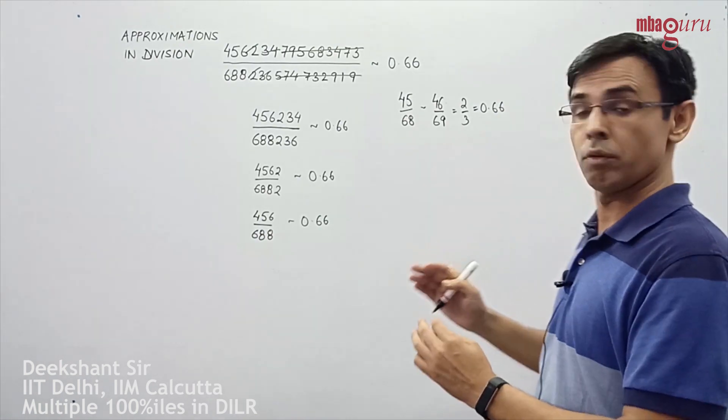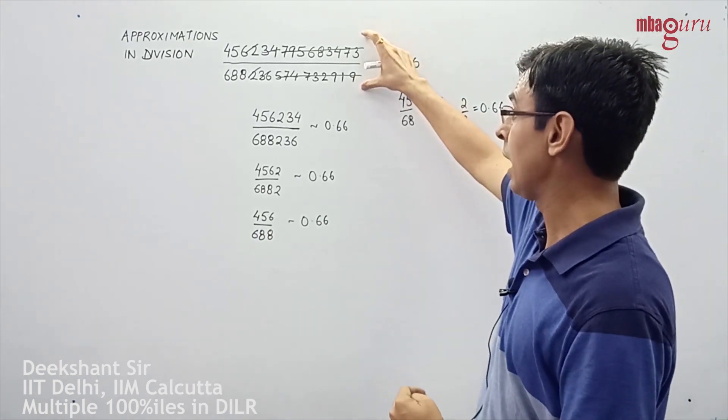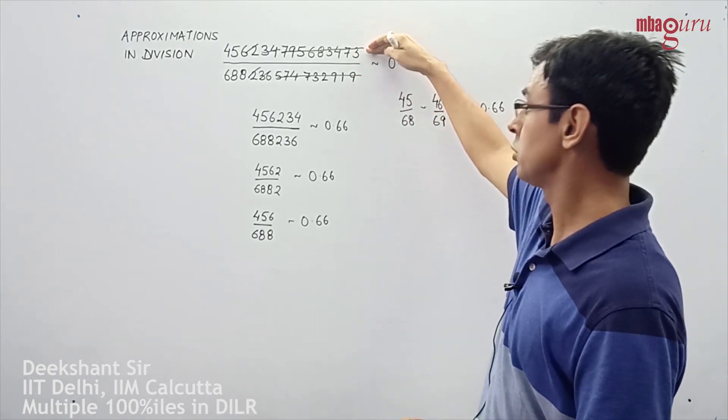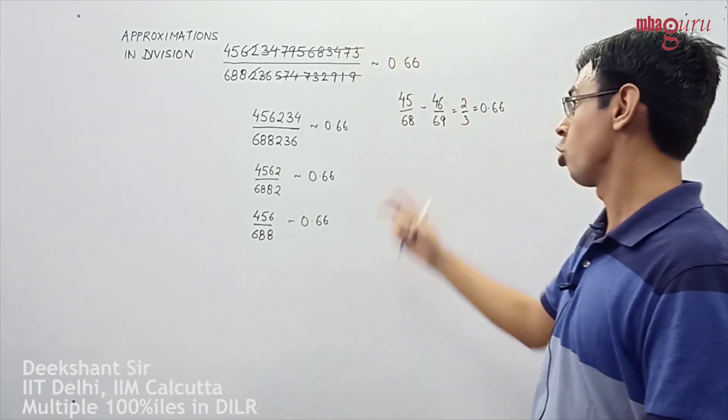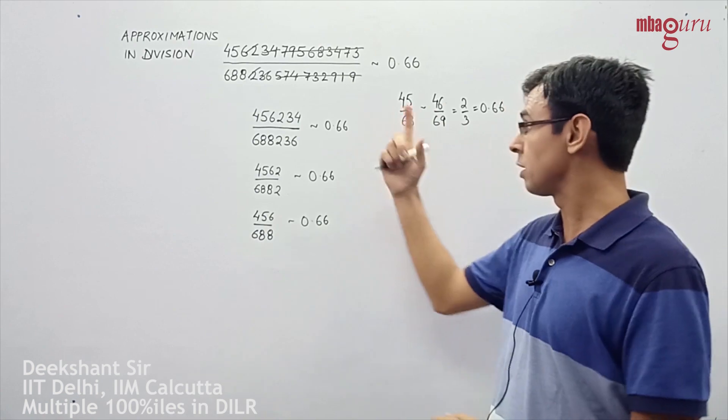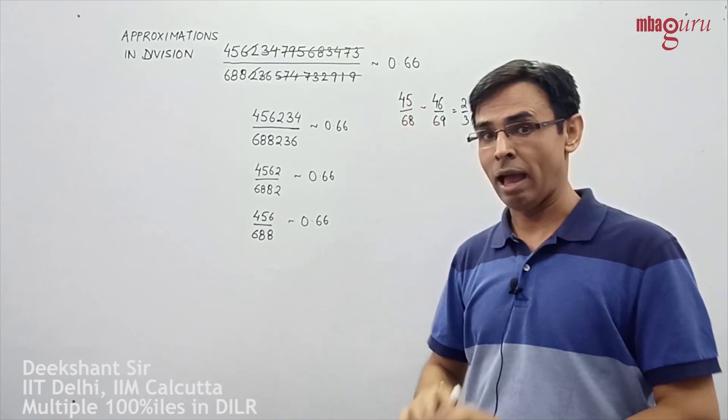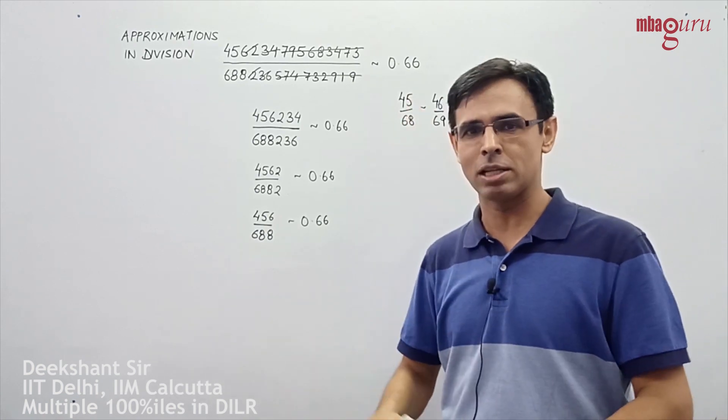So what we are essentially saying is this entire expression of 15 digits in the numerator and 15 digits in the denominator could be simply looked at as two digits in each, and that would get you extremely close to your answer.